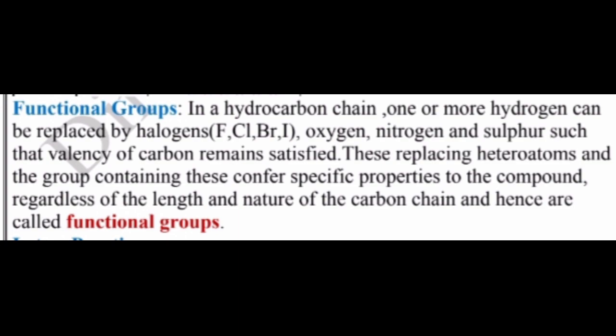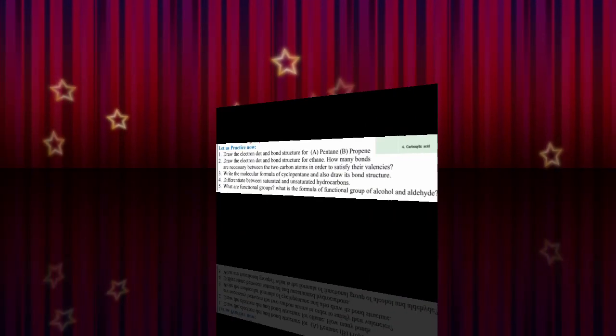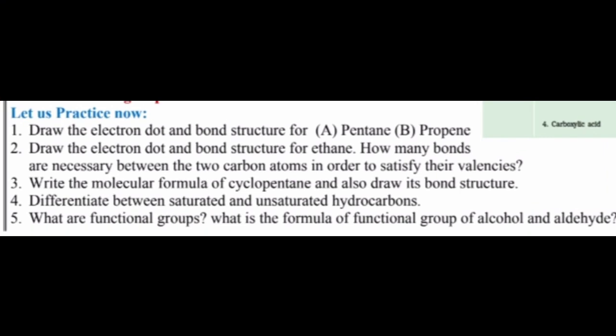Here you can see the functional groups. These include the halogens (Cl, Br), and then alcohols, aldehydes, ketones, and carboxylic acids. Let us now discuss the questions.